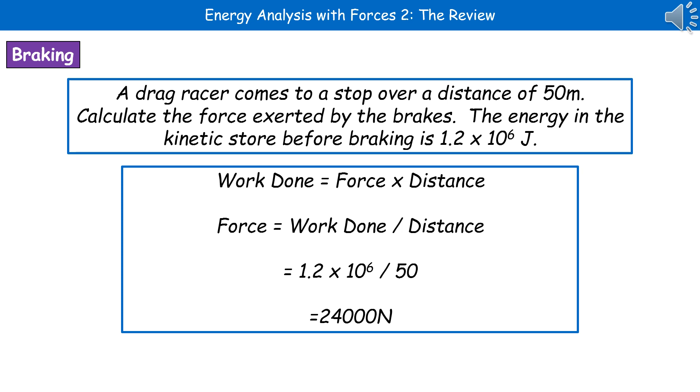Work done is force times distance. We need to rearrange that to make force the subject. So force is work done divided by distance. Read back in our question, we've got 1.2 times 10 to the 6. That's our work done. Divide that by the distance of 50 gives us our answer of 24,000 newtons.